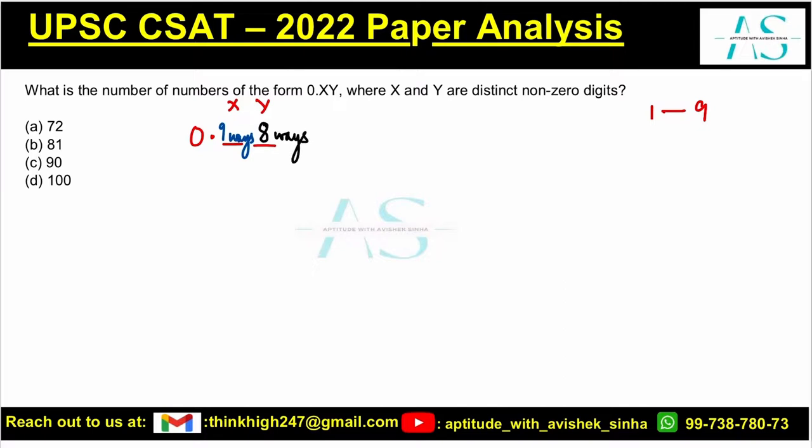What is my answer? It is simple: nine into eight which is 72 numbers or 72 ways. Option A is the correct answer. I hope this helps, take care, bye-bye, see you all in the next video.